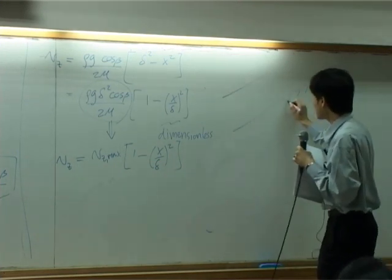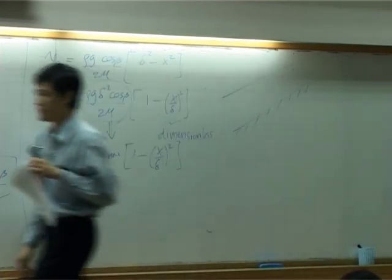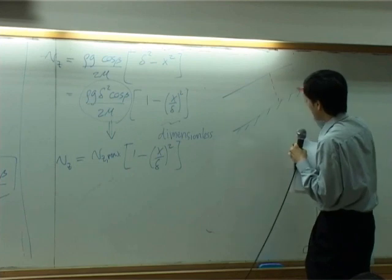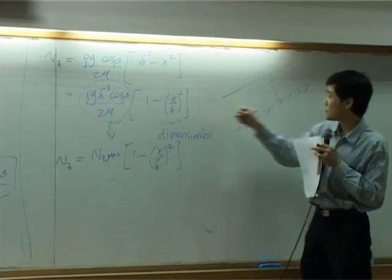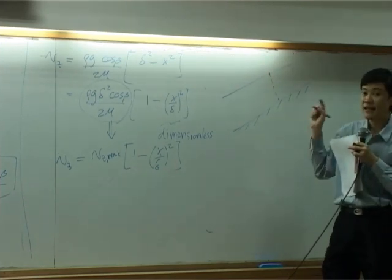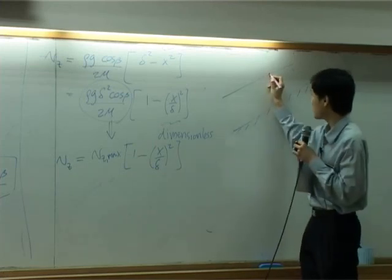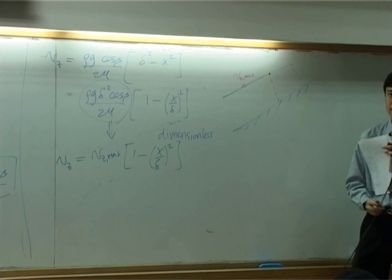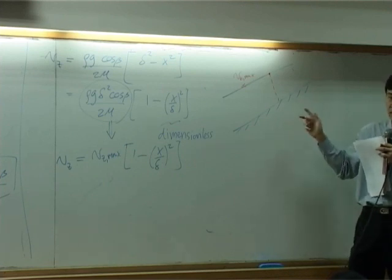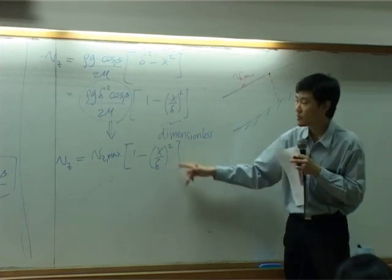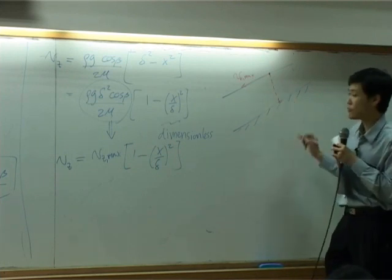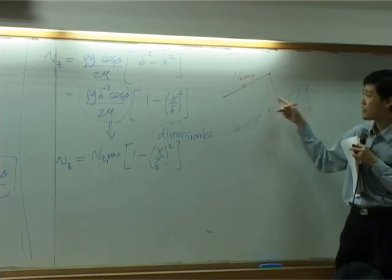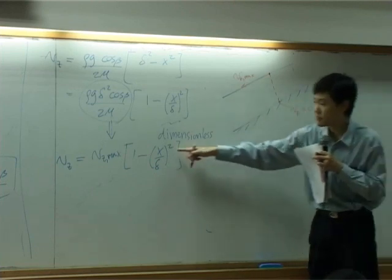If you write down velocity profile, this is velocity profile. An equation would give you... If x is 0, which is this point, velocity is maximum. And this velocity is going down in z direction. So let's go down like this. This is vz maximum. At x equal to delta, this ratio becomes 1. Everything turns to be 0. So at x equal to delta, here vz equal to 0. Along the way, the profile is parabolic.